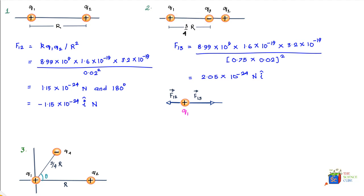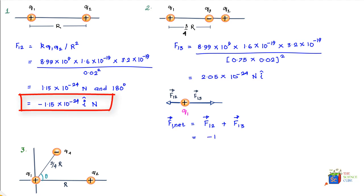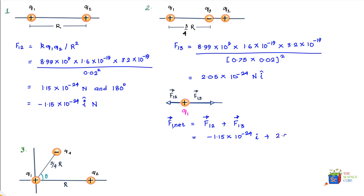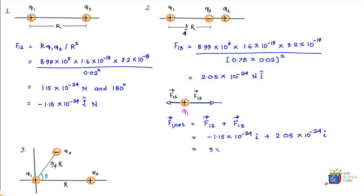Now we sum the forces vectorially: net force on 1 equals force on 1 due to 2 plus force on 1 due to 3. Force on 1 due to 2 is −1.15×10⁻²⁴ i, and force on 1 due to 3 is +2.05×10⁻²⁴ i. Summing these gives 9×10⁻²⁵ N in the positive i direction.